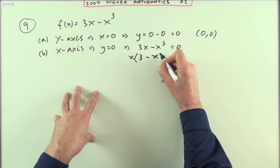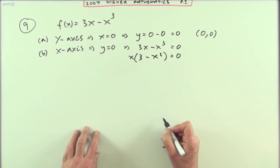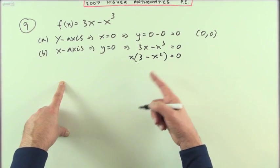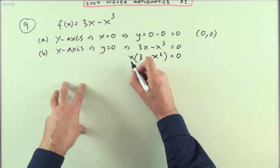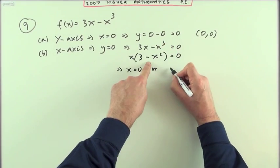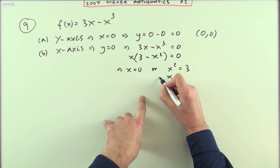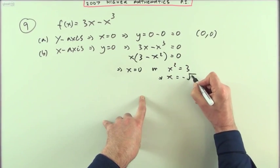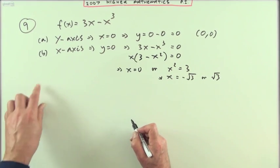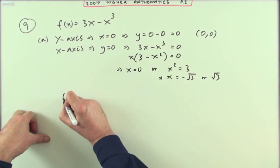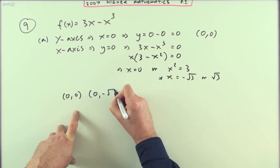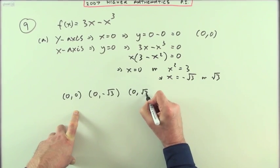That's x times 3 minus x squared equals 0. That's not quite the difference of two squares so I don't think I really want to factorise it. You could if you like factorise it to the root 3's but I'll just solve that separately. That means that either x equals 0 which I had already or x squared equals 3. In which case x equals negative root 3 or positive root 3. So the points where it cuts the axis are 0, 0, that does for them both, 0 negative root 3 and 0 root 3.